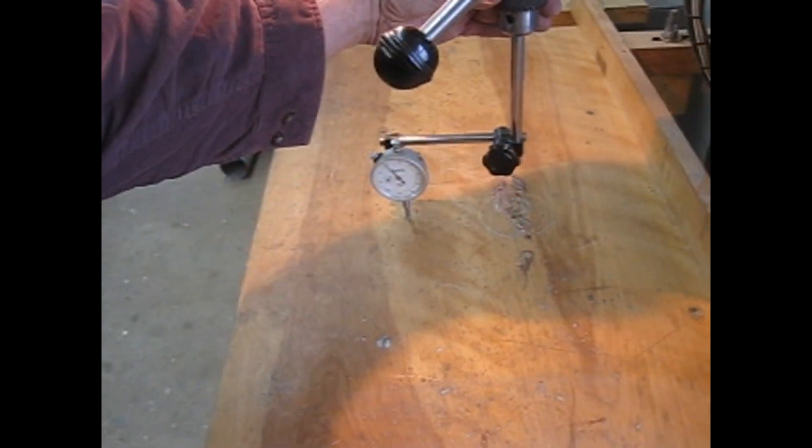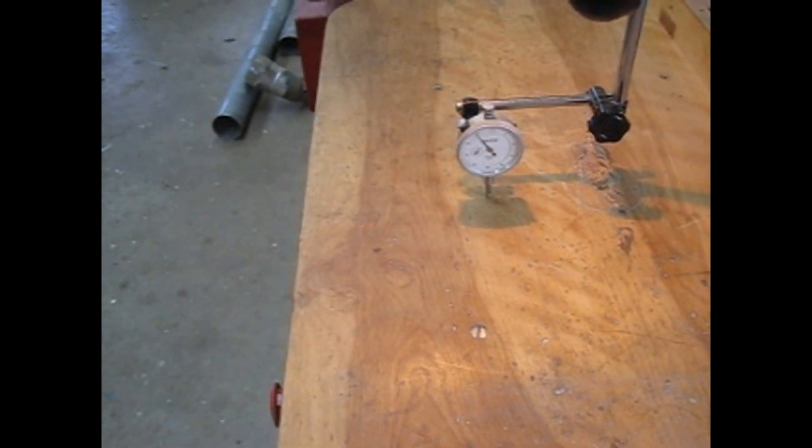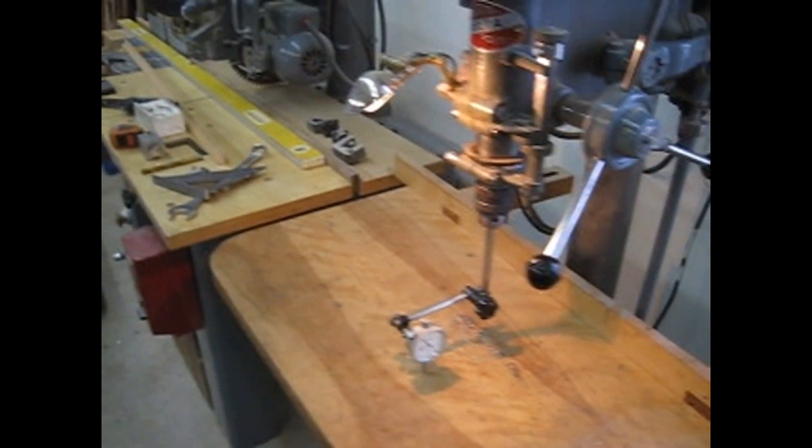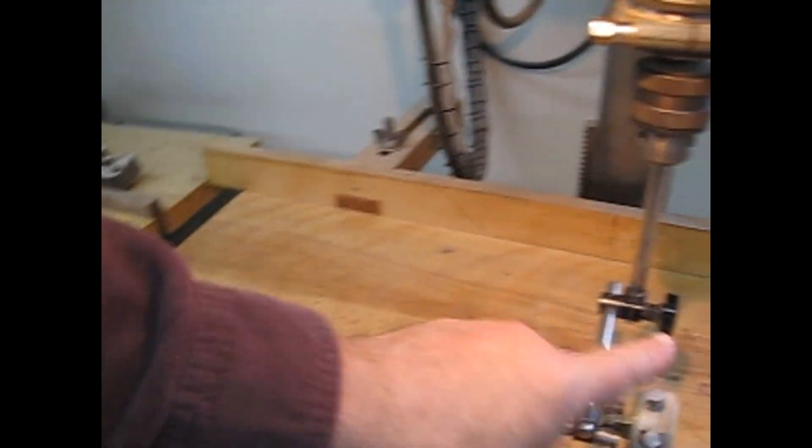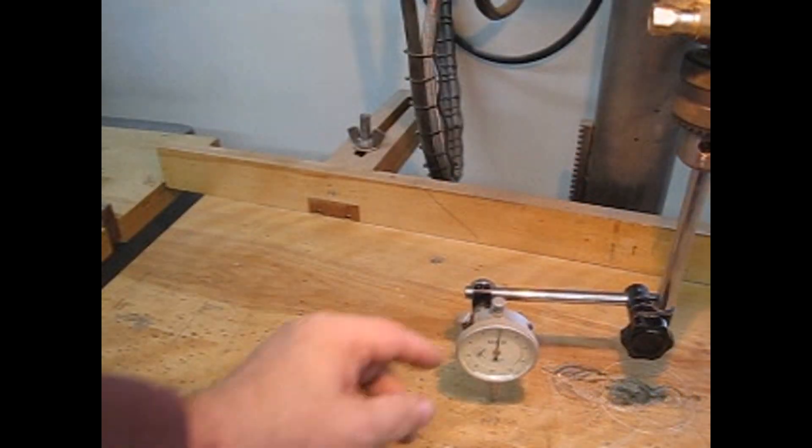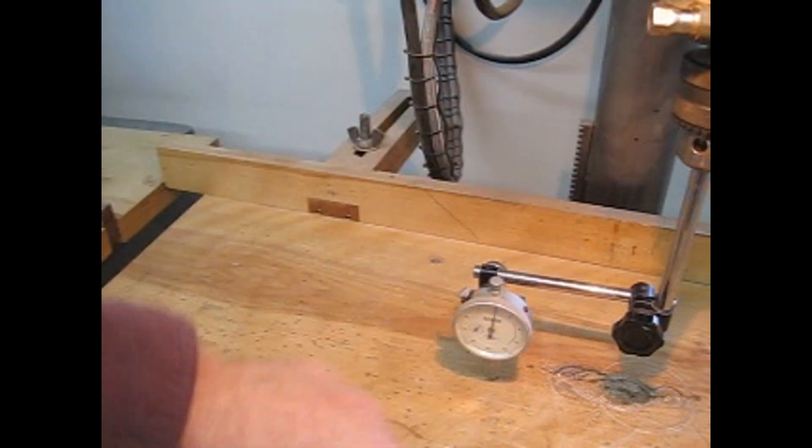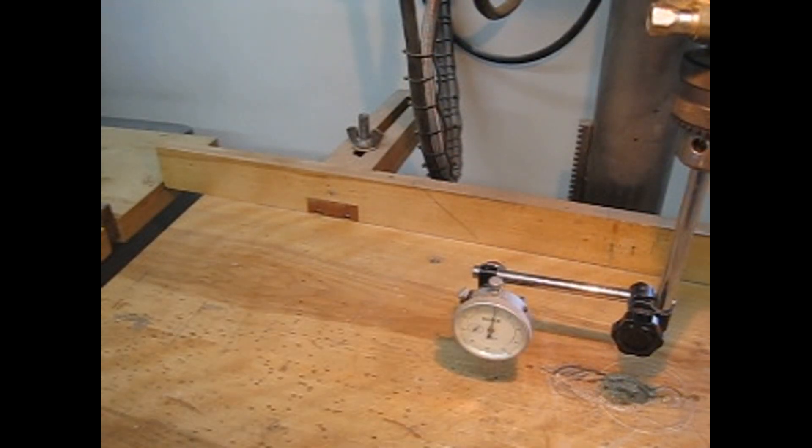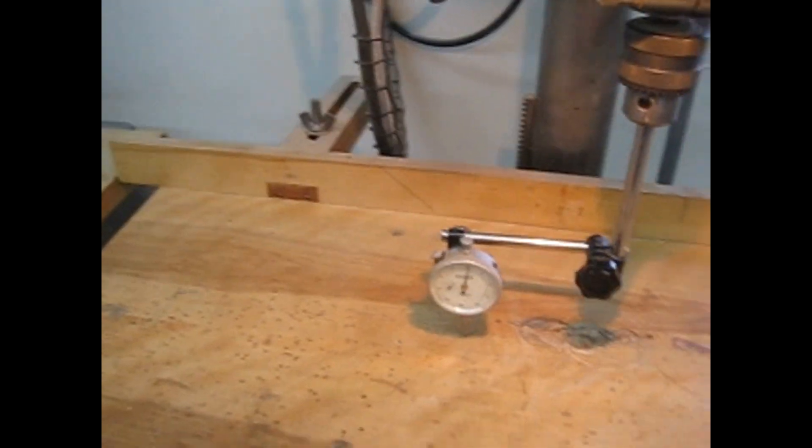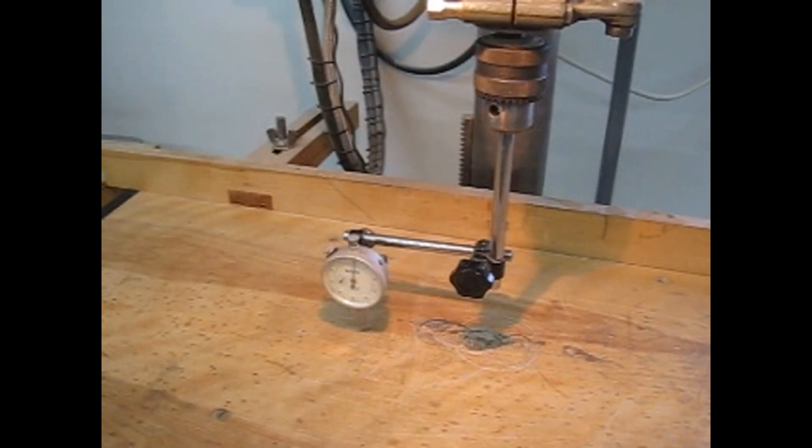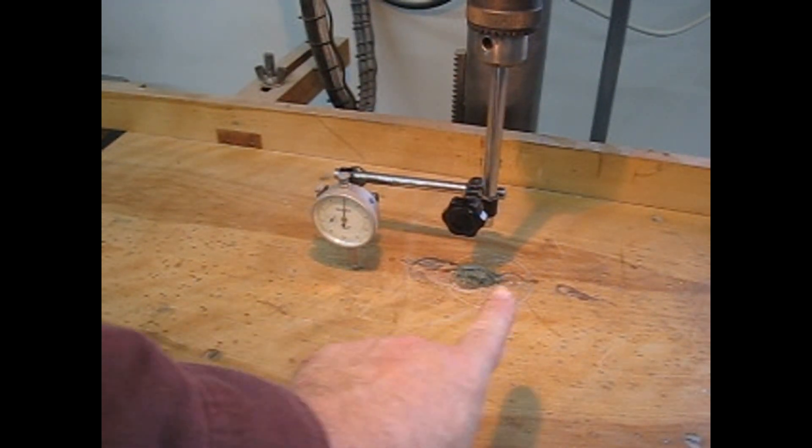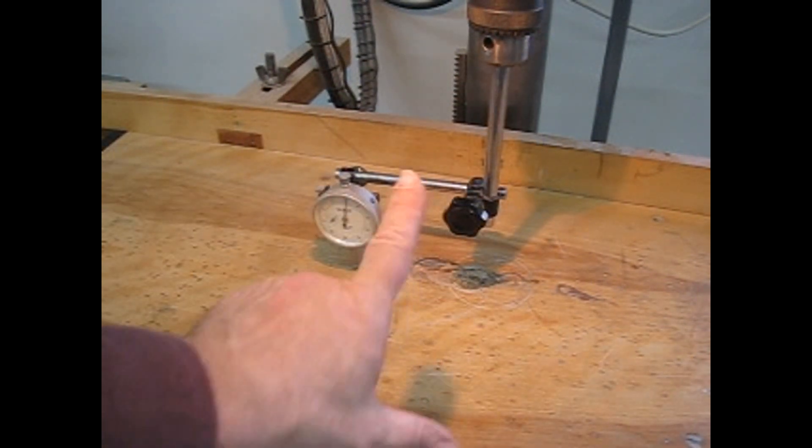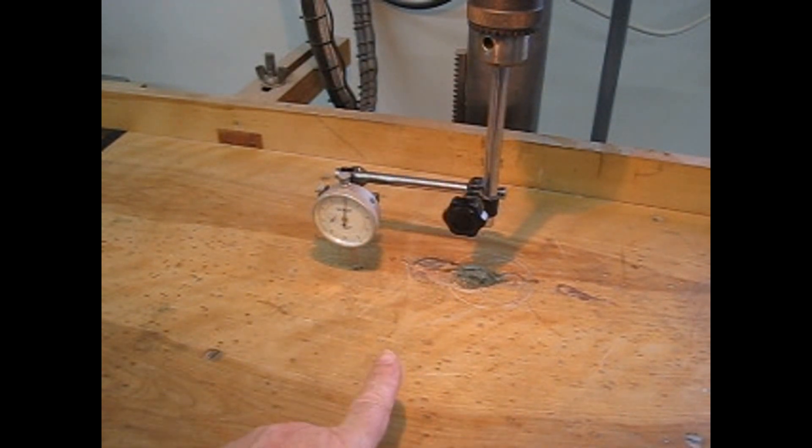Interestingly, front to back on the machine is out six thou, but that could just be this top. Anyway, that is the simplest way to set a drill press up perfectly 90 degrees and very easy. Thank you.